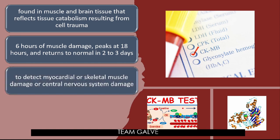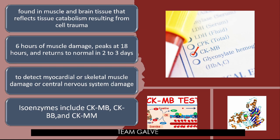The test for CK is performed to detect myocardial or skeletal muscle damage or central nervous system damage. When talking about CK, you also talk about isoenzymes: CK-MB is the major cardiac marker — found mainly in cardiac muscle; CK-BB indicates damage to the brain; and CK-MM is found mainly in skeletal muscle. These are the categories or classifications of CK.